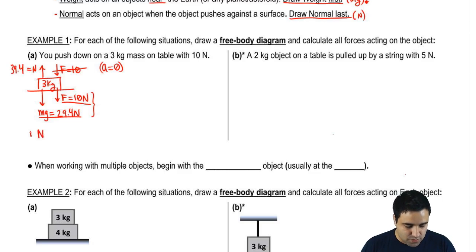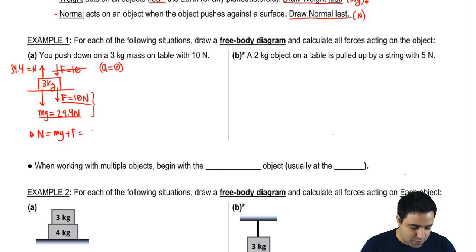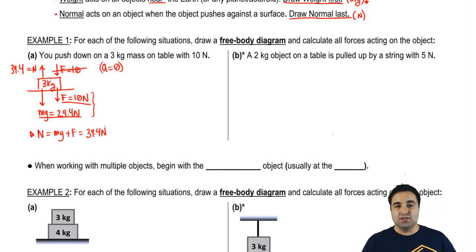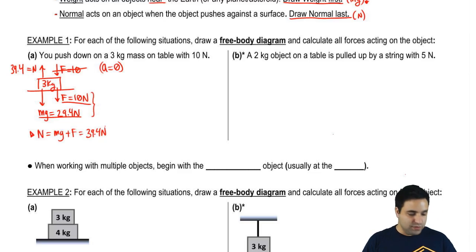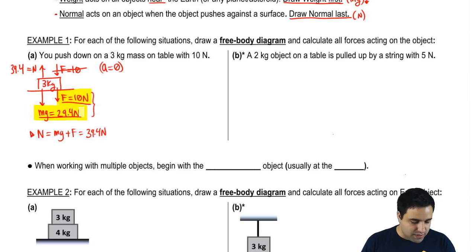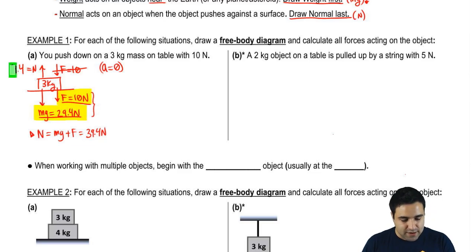In this case, normal equals mg plus F, or 39.4 newtons, because normal has to cancel both of those forces. The quick way is to just look and say the force going up has to equal the forces going down, so that I have equilibrium.